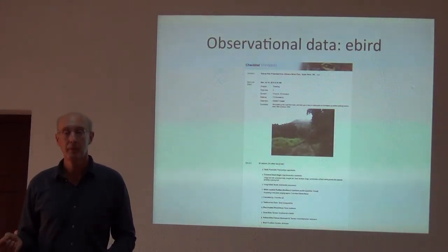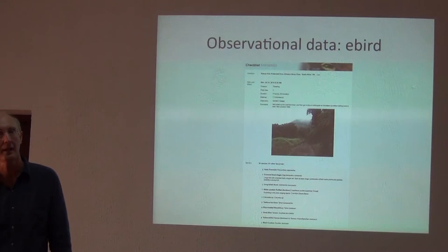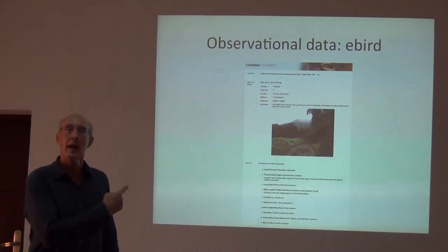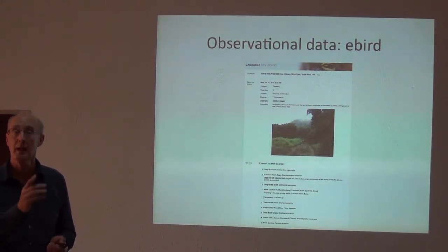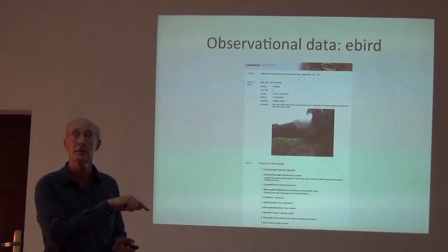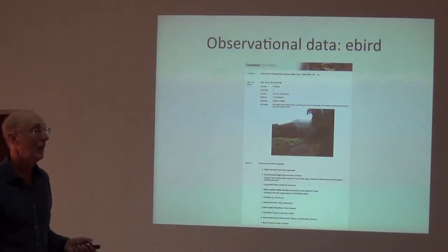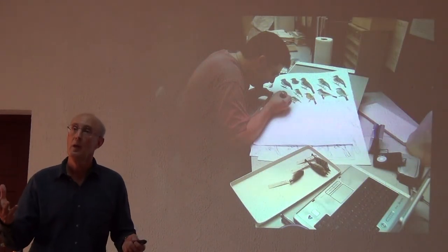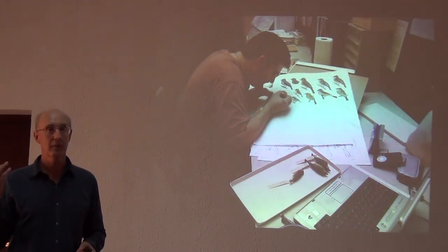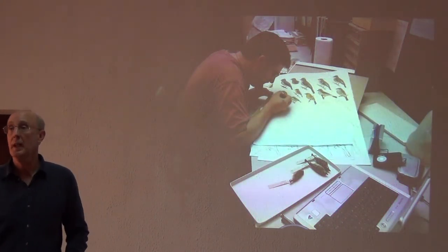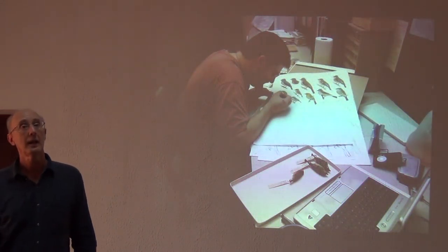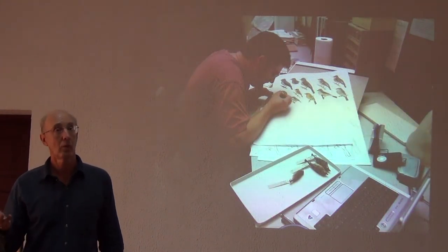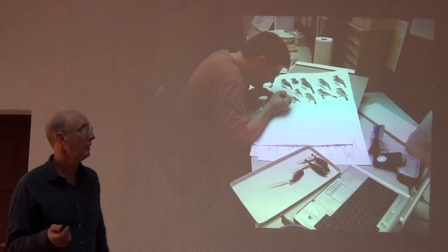Observational data — in the past, people just put this in their field notes and unless you knew about those notes, it was lost data. These days, we can enter observational data into an online database for the whole planet, and Jacob will be talking about that in detail here in a few minutes. Obviously, a basic inventory provides information for an area. If it's an area that is not a national park or reserve, those data may help us design parks in areas where there is no reserve.